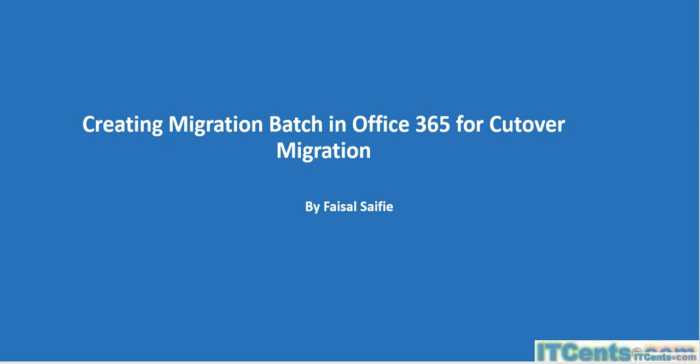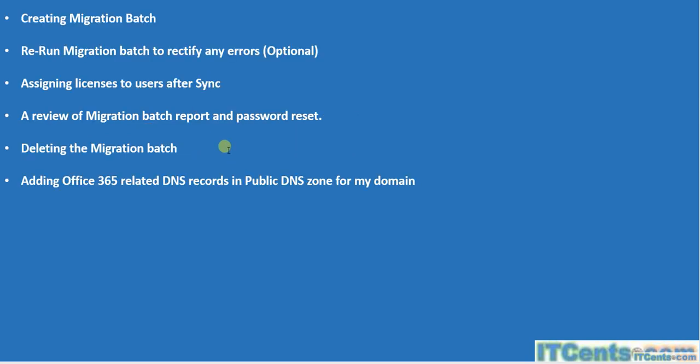In this video I will show you how to create a migration batch in Office 365 admin center for performing cutover migration. We will also cover creating and configuring a migration batch, connecting to on-premise Exchange Server - in my case Exchange 2016 - and after performing sync, once everything is synced, user information and mailbox data will be in Office 365.